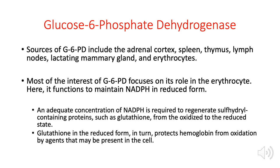There are many tissue sources of glucose 6-phosphate dehydrogenase — the adrenal cortex, spleen, thymus, lymph nodes, and mammary glands. But it is very important to memorize that this enzyme is present in erythrocytes. Most interest in G6PD focuses on its role in red blood cells, where it protects them from the damaging effects of oxidizing agents by producing NADPH.